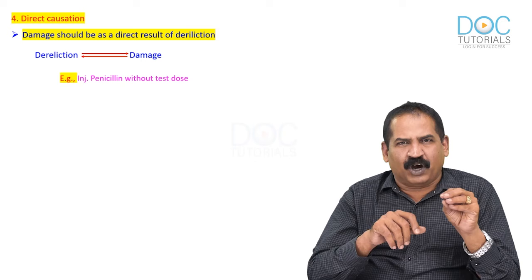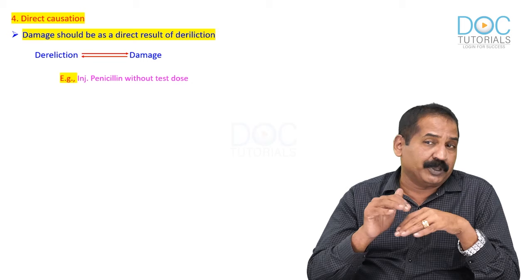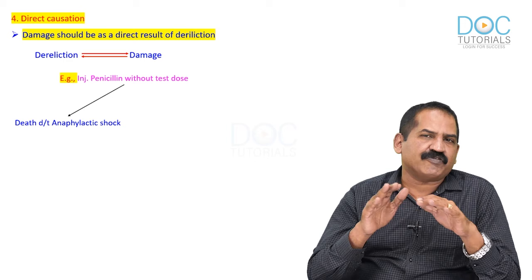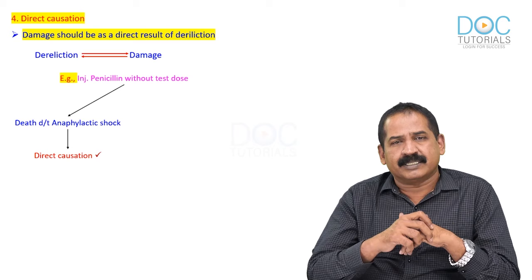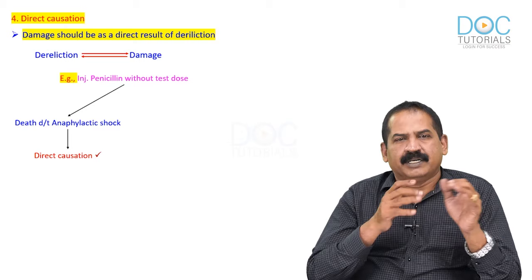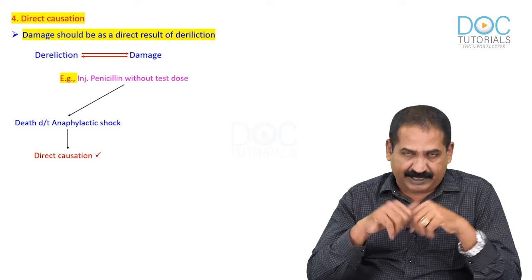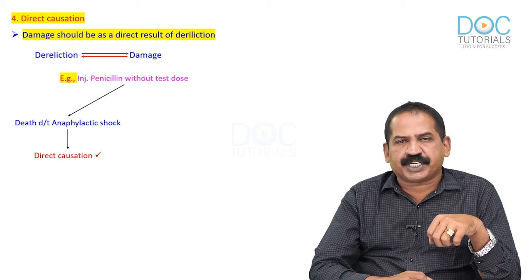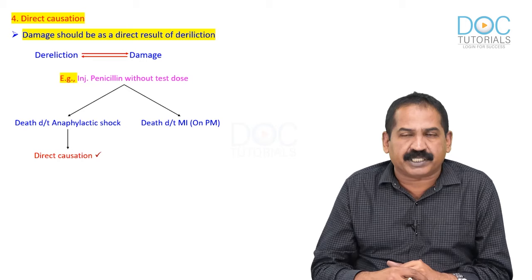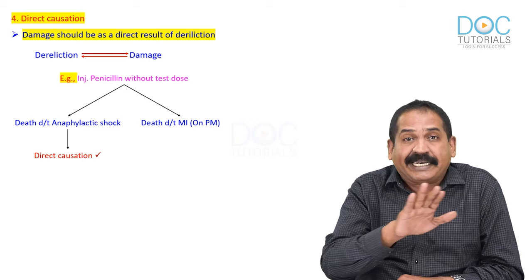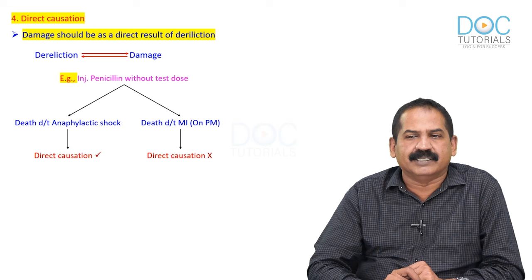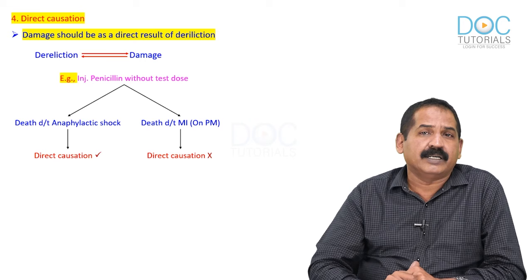Two scenarios with penicillin without a test dose: First, death occurs due to anaphylactic shock — here there is direct causation. Second, the doctor gives penicillin without a test dose, the patient dies, and on post-mortem examination the doctor's report states death was due to myocardial infarction — meaning the patient would have died of MI regardless, unrelated to the injection. In this case, there is no direct causation.